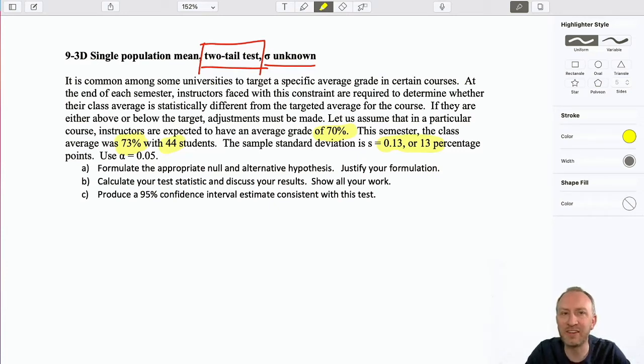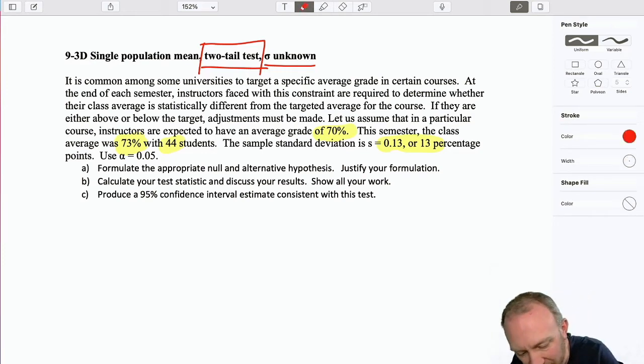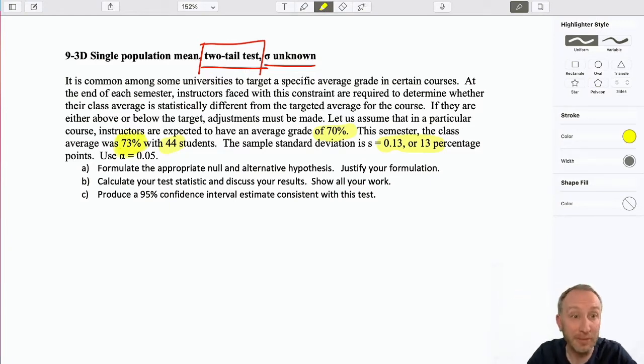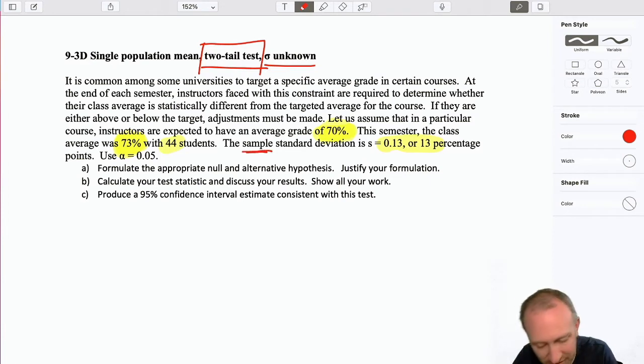So what kind of a test are we doing? Well, again I know I'm working with a single population because I only have one sample mean that's been given. I know I'm doing a t-test because I see clues all over the place. I have a sample standard deviation, and I'm given s.